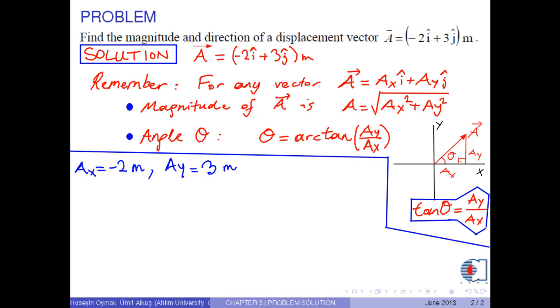Therefore, the magnitude of the displacement vector a is square root of minus 2 squared plus 3 squared, which is approximately 3.61 meters.